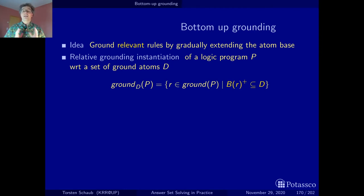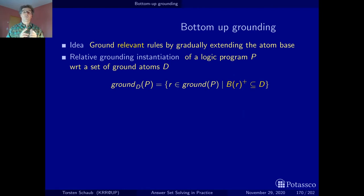Also keep in mind that we look at safe rules, so all variables occur among the positive body literals. Hence, once we have an instantiation of the positive body literals, we have more or less an instantiation of the whole rule, because all variables have received terms from the term universe. Now let's look at the algorithm we obtain by using this definition.